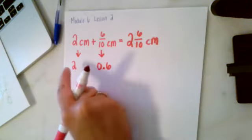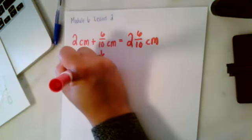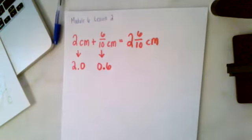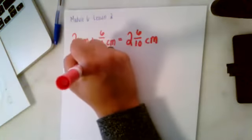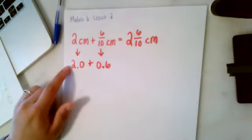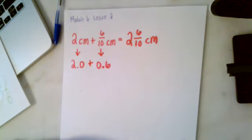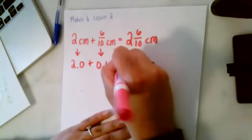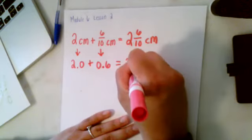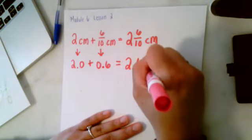Now this 2 is actually 2.0. Usually we drop the 0 which is why sometimes you may be confused. But we're going to bring down our plus sign. So now we have 2.0 plus 0.6. Now this is going to equal 2.6 centimeters.